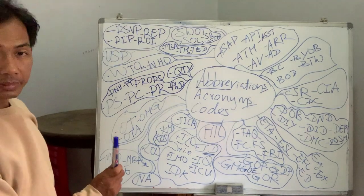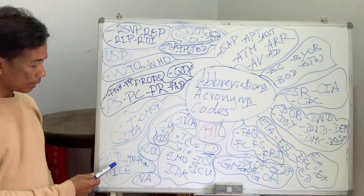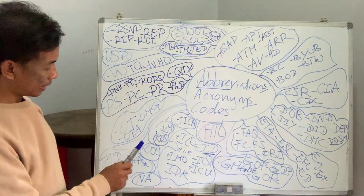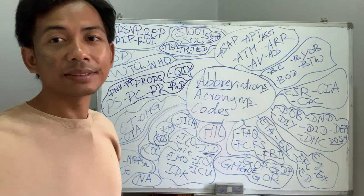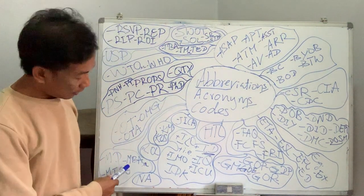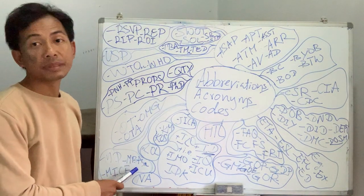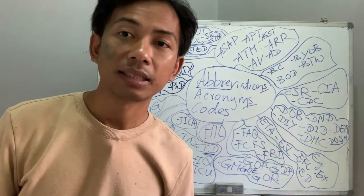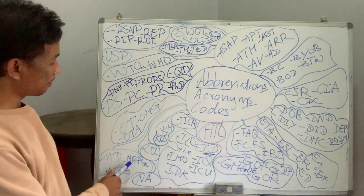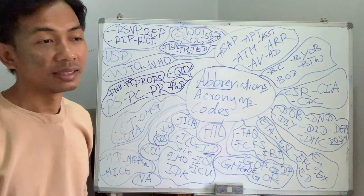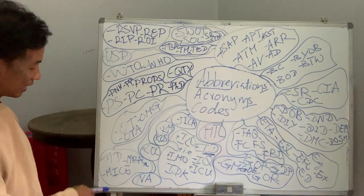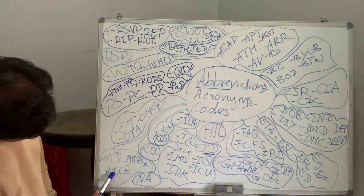MD — managing director, just like MD, GM, and ED — all big positions. MBA — master of business administration. People also joke that MBA stands for 'married but available' — none of the couples like it.